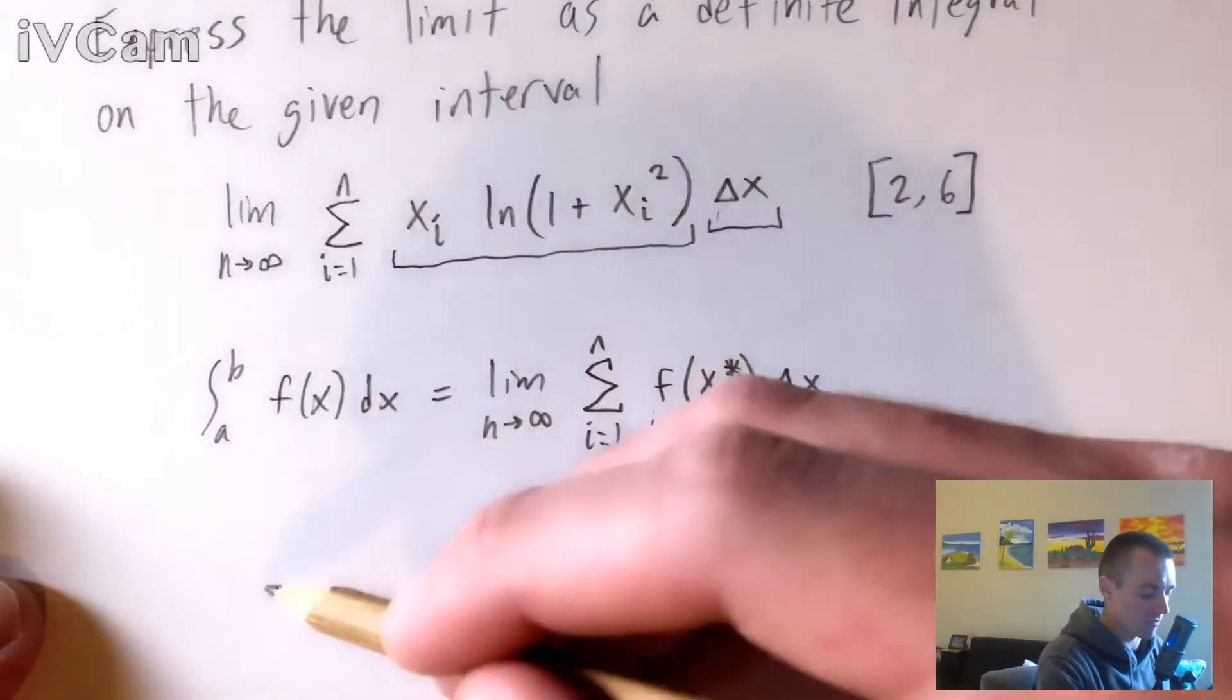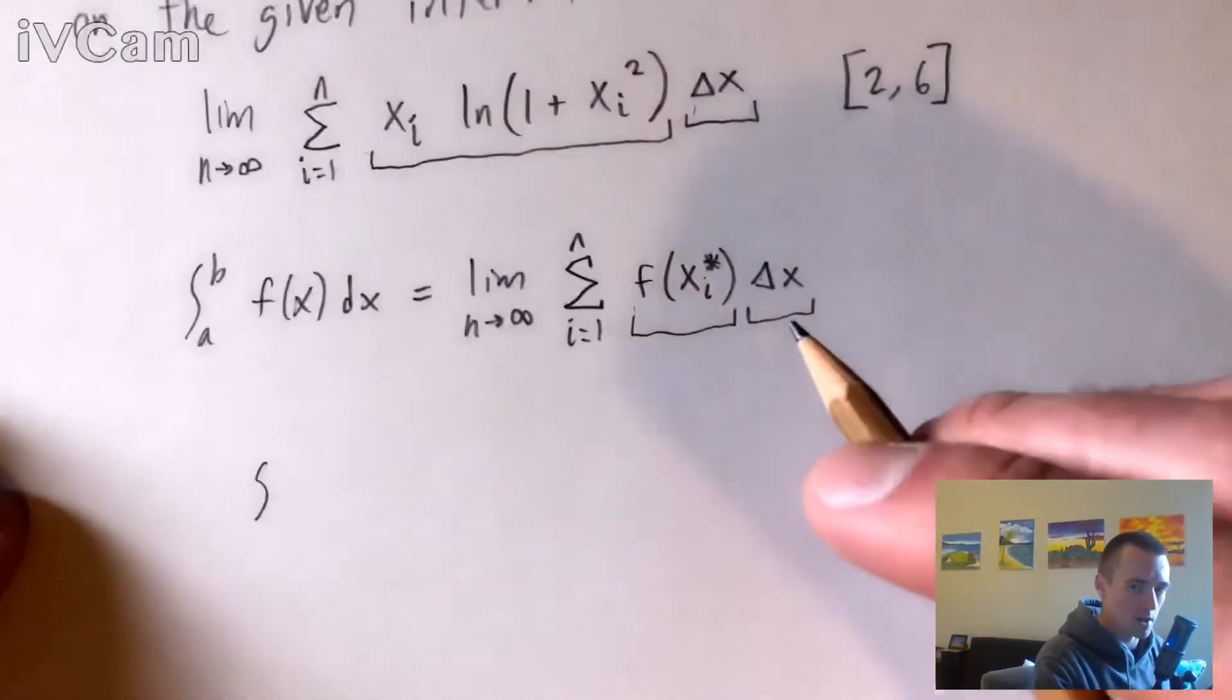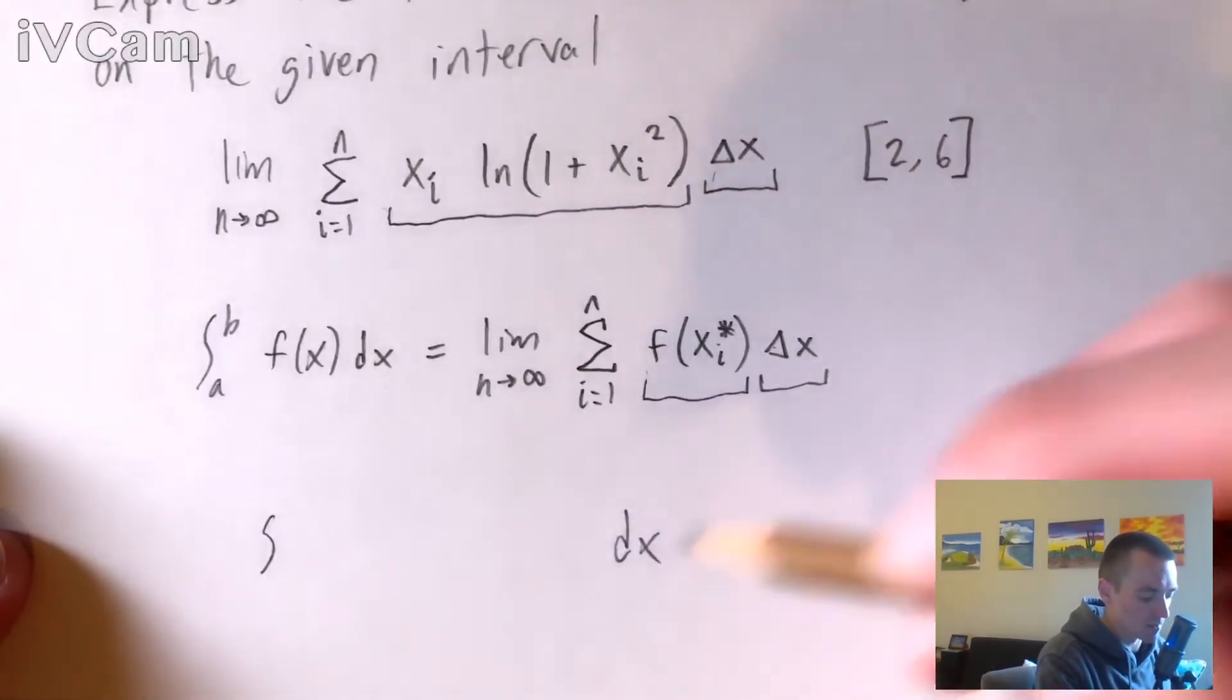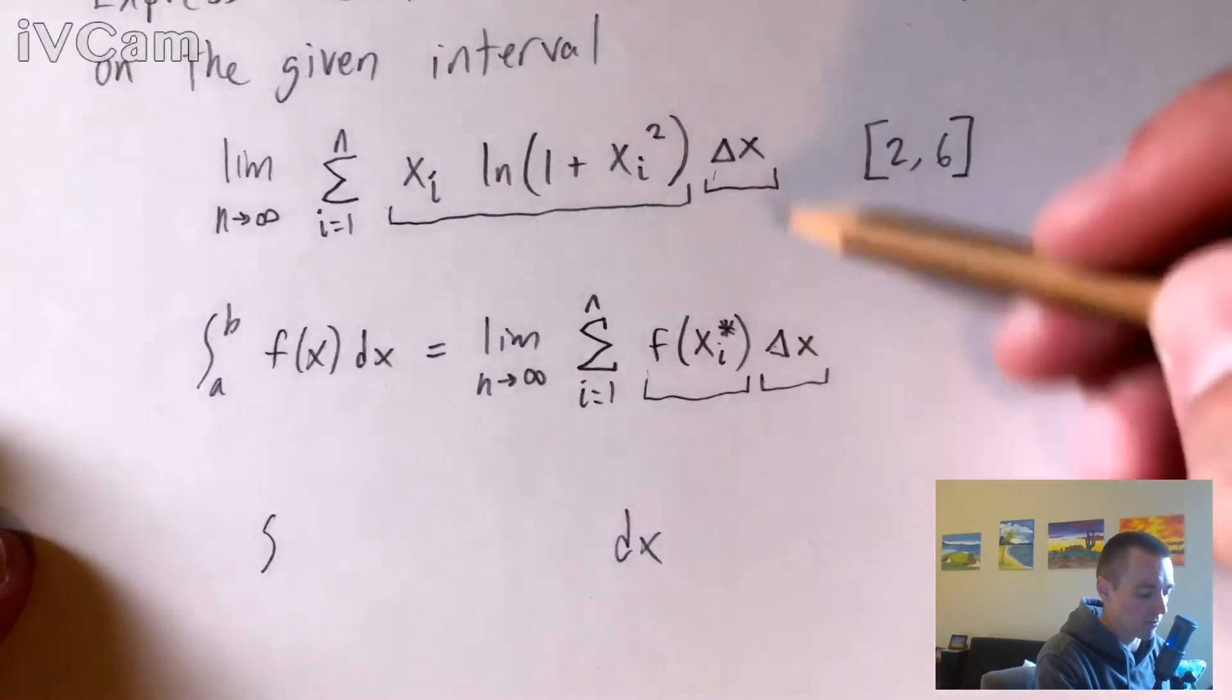So we know that we're going to have an integral from a to b, which we'll figure out what a and b are in a second. But we're going to have the integral from a to b of some function times a dx at the end. So we know that our dx is just going to come from this delta x.